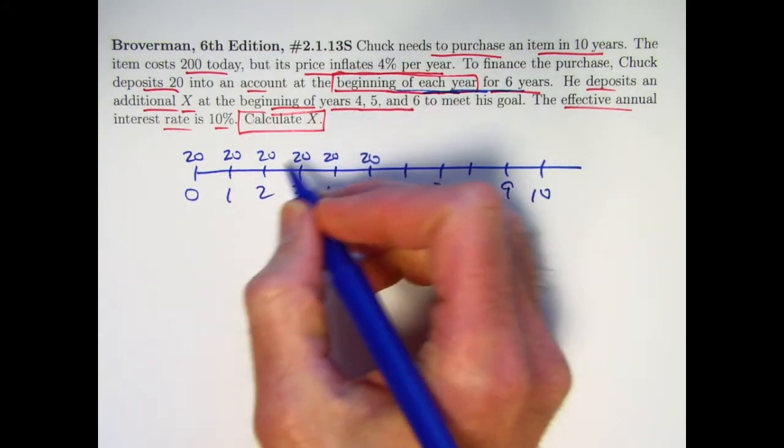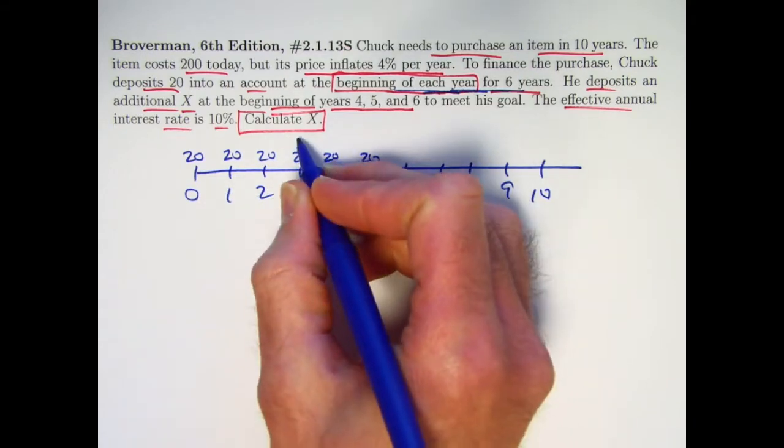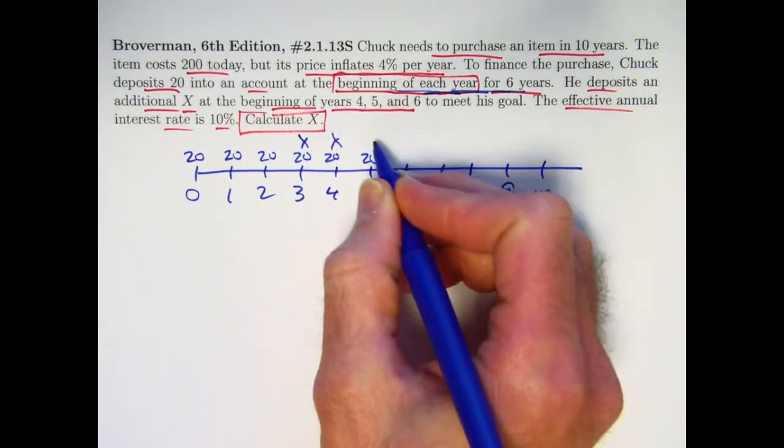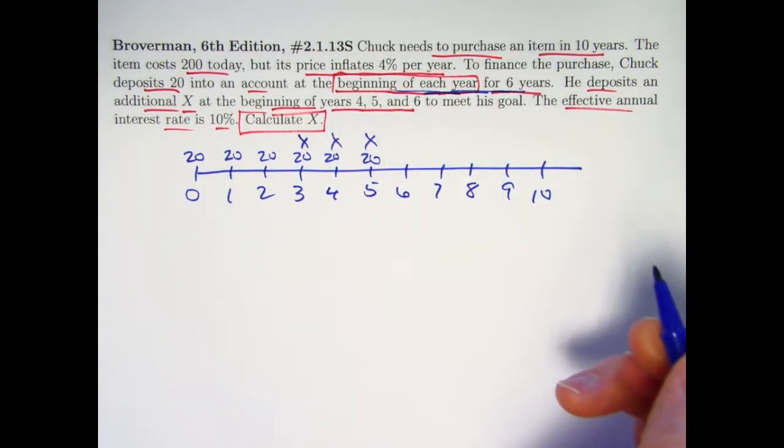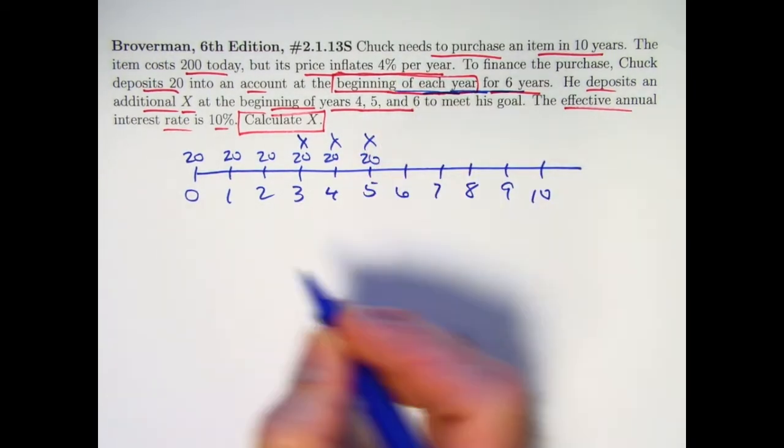And then x is deposited at the beginning of years 4, 5, and 6. Year 4 starts at time 3. Year 5 starts at time 4, and year 6 starts at time 6.